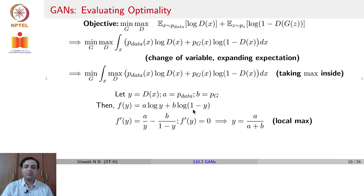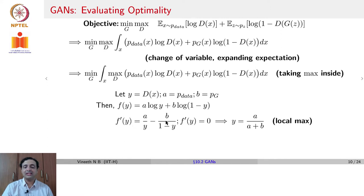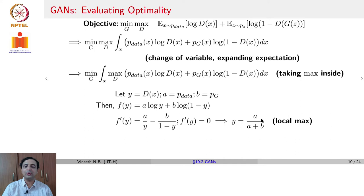We need to know when the maximum over d — or maximum over y — is obtained for such a function. To find the maximum, we take the derivative and set it to zero. The derivative f'(y) = a/y minus b/(1 minus y), which follows from derivatives of log y and log(1 minus y). Setting this to zero, the maximum is obtained at y = a / (a + b).